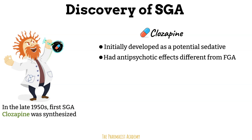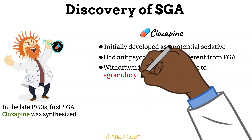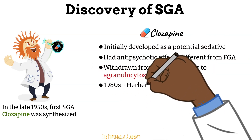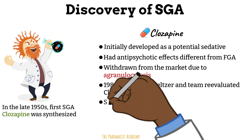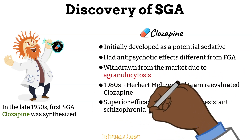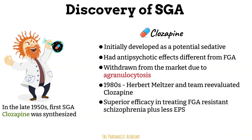Clozapine was not approved for use in most countries because it was not initially seen as having any significant advantage over existing drugs. Additionally, early clinical trials indicated some severe side effects, notably agranulocytosis — a potentially fatal drop in white blood cell count — which led to clozapine being withdrawn from use in many places by the early 1970s. In the 1980s, a Canadian researcher named Herbert Meltzer and his team, who had been studying the neurochemical effects of antipsychotics, began to take a fresh look at clozapine. They found that clozapine had superior efficacy in treating schizophrenia, especially for patients resistant to first generation antipsychotics, and most importantly, it had fewer extrapyramidal side effects.